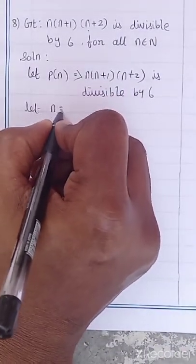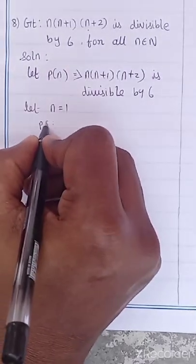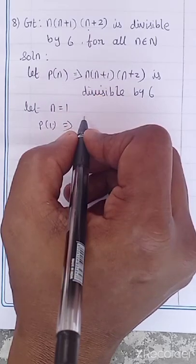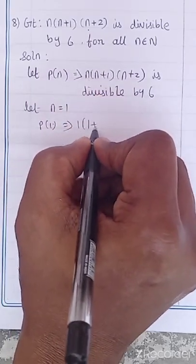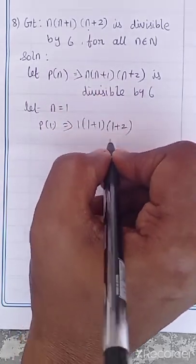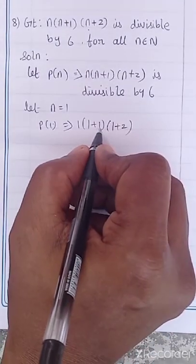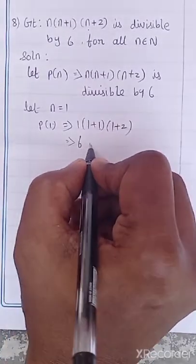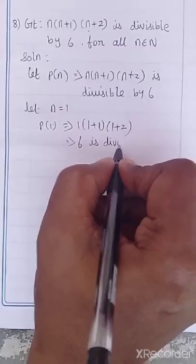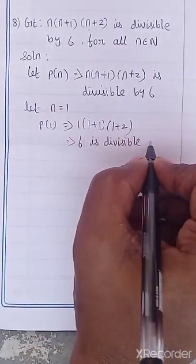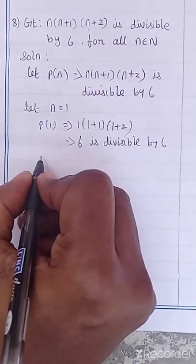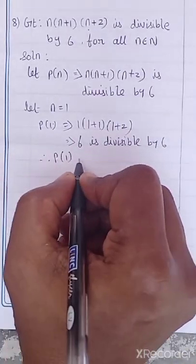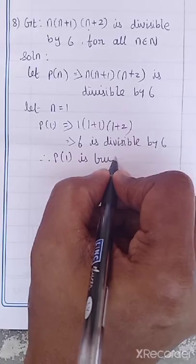Let N equal to 1. So P of 1 implies — substituting 1 — 1 into 1 plus 1 into 1 plus 2, which is 1 into 2 into 3 equals 6. Since 6 is divisible by 6, therefore we can conclude that P of 1 is true.